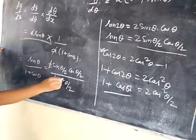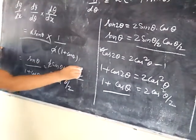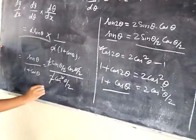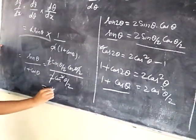So the 2 and 2 cancel, and cos(theta by 2) cancels, giving the final answer as tan(theta by 2).